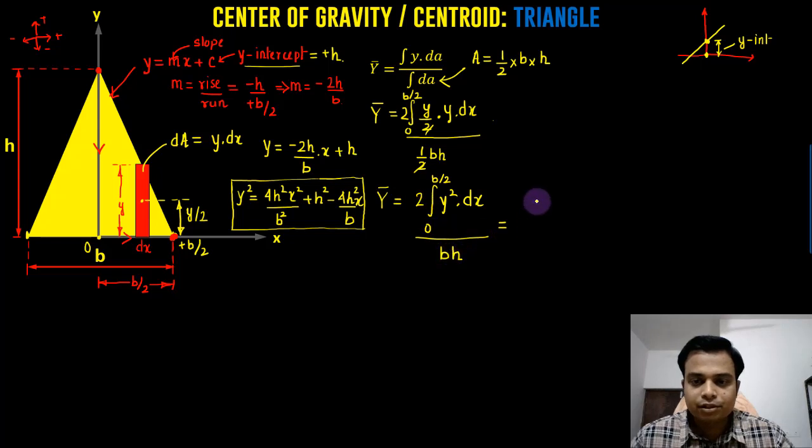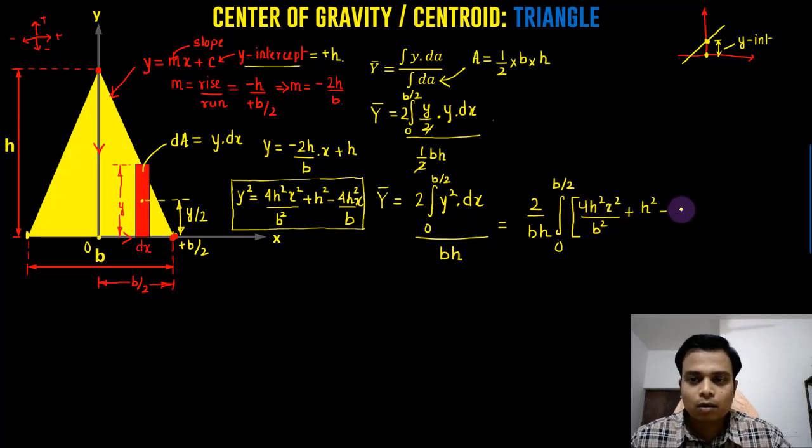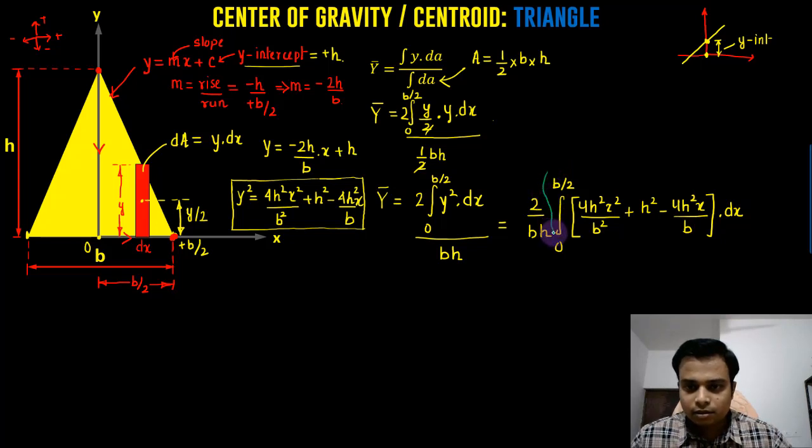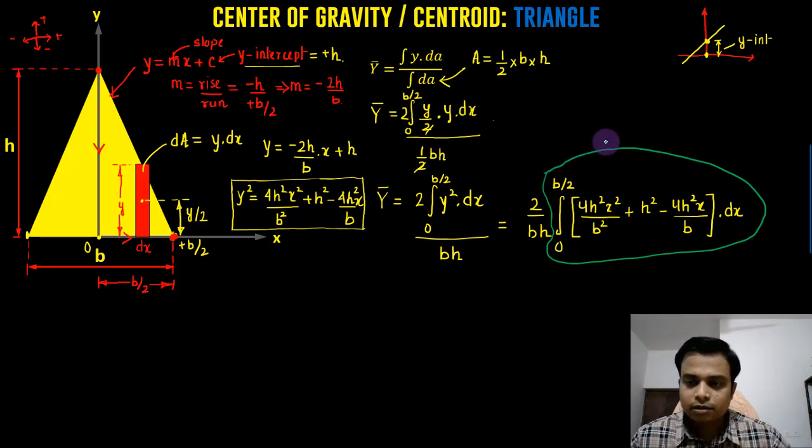The next step is going to be very important. So let's start. We're going to have to put the value. So it's going to be equal to this 2 over bh. And then, we have this big integration in front of us from 0 to b over 2. And then, all of this y square. 4h square x square upon b square. Let me write all of this. Let's just say that this much portion is the integral that we need to work with. And let's say this is written as I.